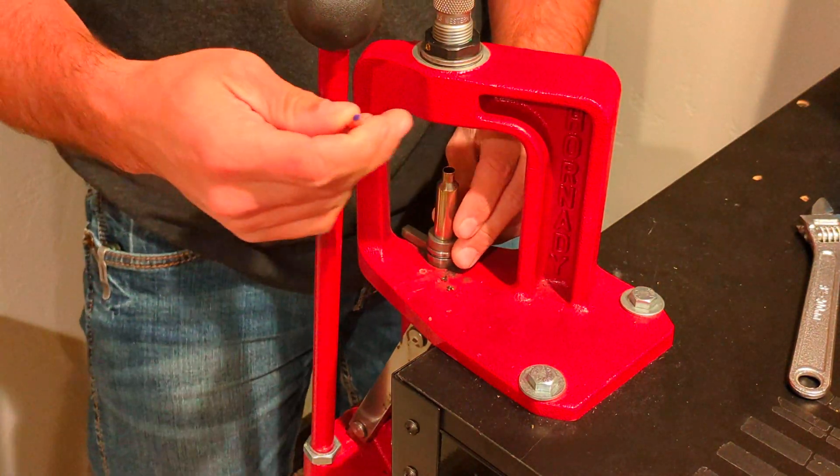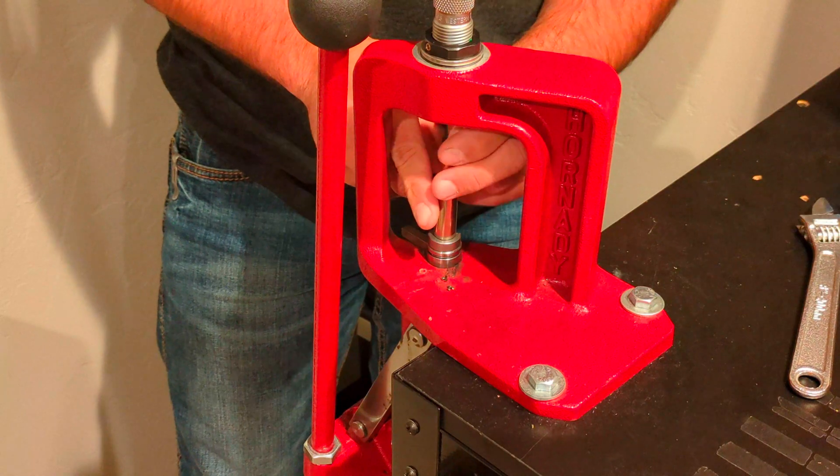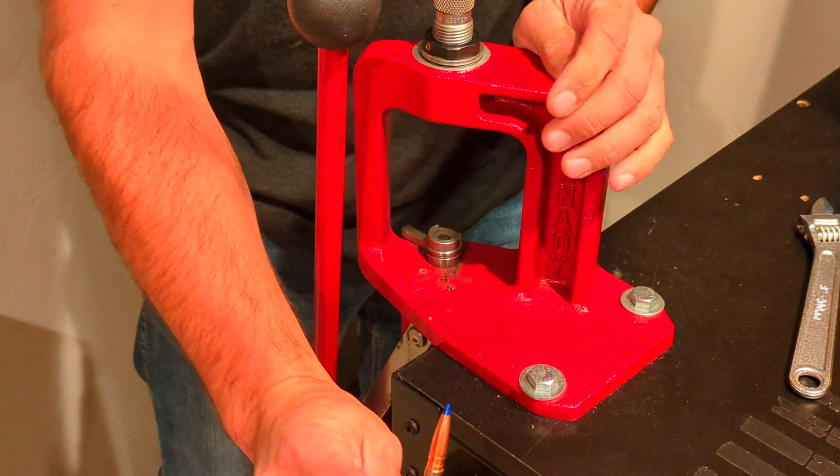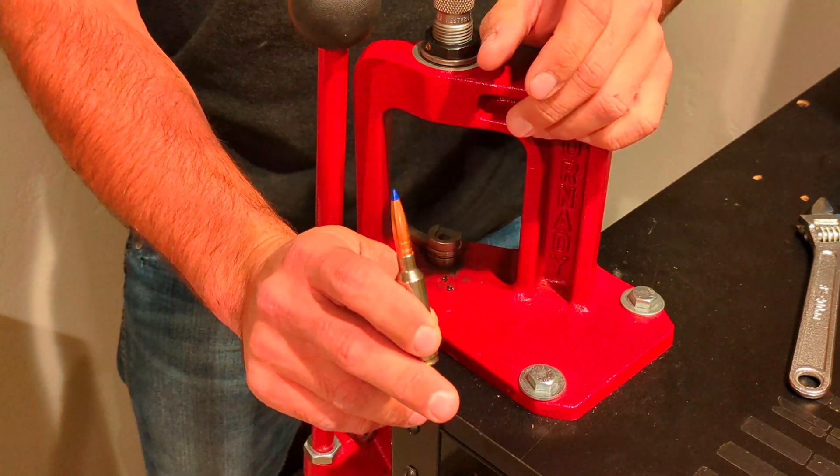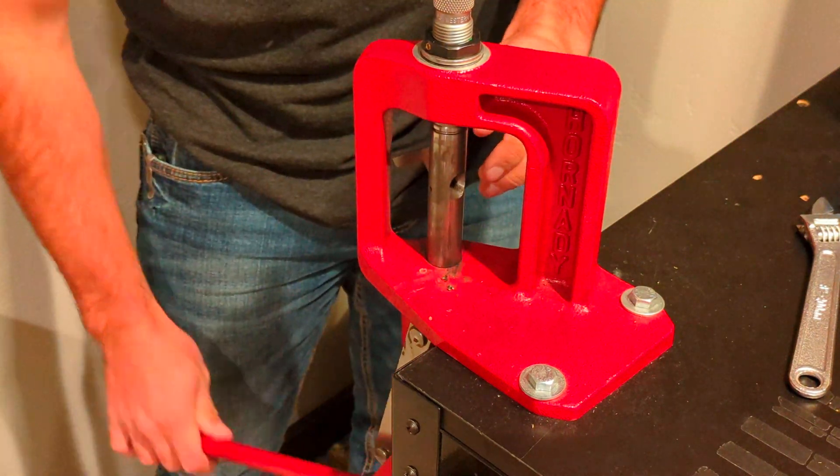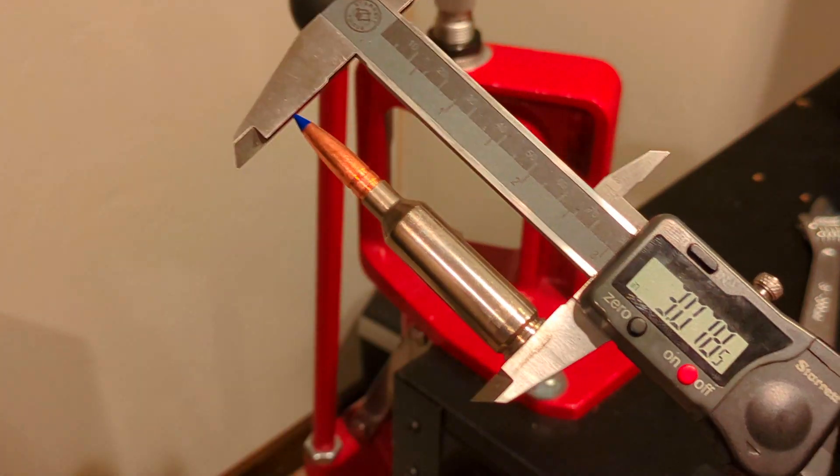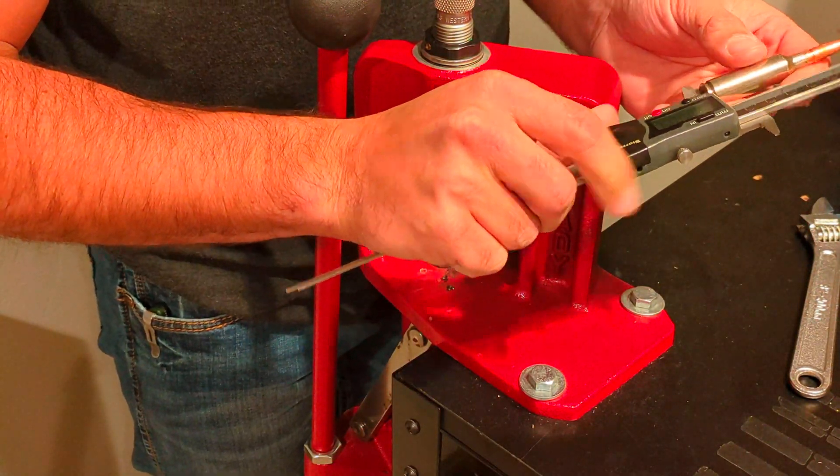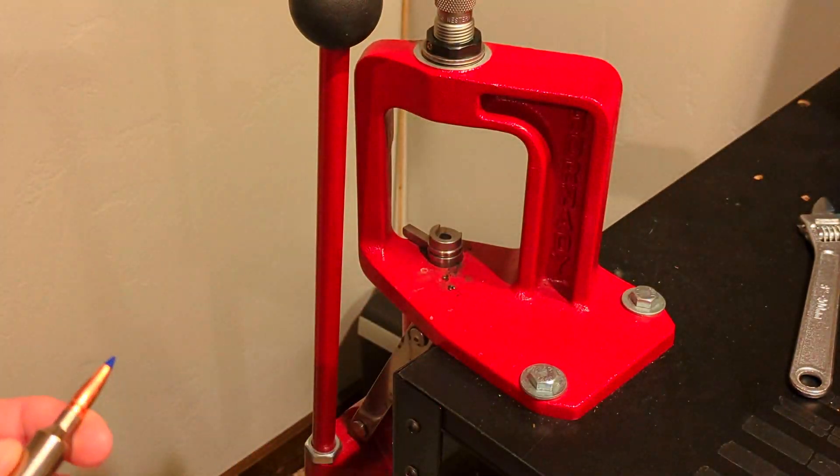My first measurement is going to be just my case overall length. So what I've got going on here, I've got the die, I've got the seating stem backed pretty far out because I don't want to overseat it. And so we're just going to get a light seat. So a really light seat and I'll just start working it deeper and deeper until I hit that 2.950 overall length and then seat it just a couple thousandths deeper. And then we'll get a base to ogive measurement to see what our jump is. We're at 3.078, so we've got a bunch more to go.